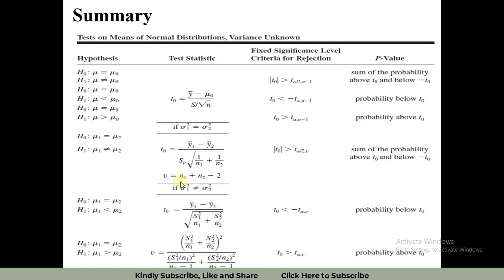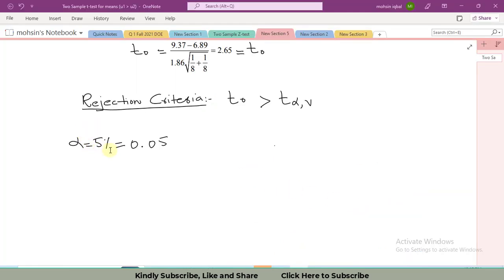The formula for v is n1 plus n2 minus 2. I have taken alpha equal to 5% or 0.05, so v degree of freedom become 8 plus 8 minus 2 is equal to 14. I have to check this value in the t distribution table, t0.05 with 14 degrees of freedom.